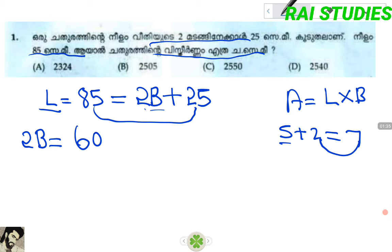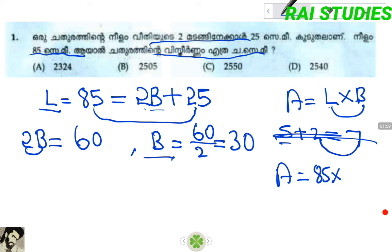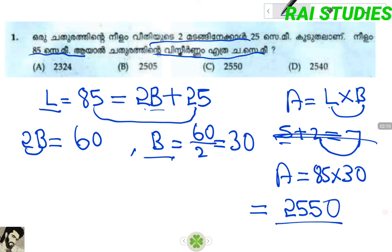Then, 60 is equal to 2. If you are equal to 60, B is equal to 60 and we have 30. I think the area is equal to 30. 85 is equal to 30. That's the answer.